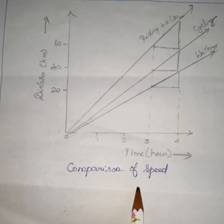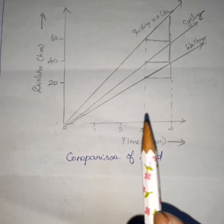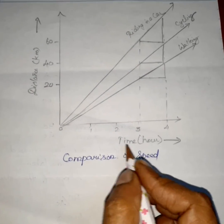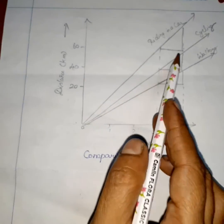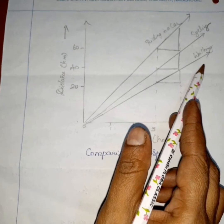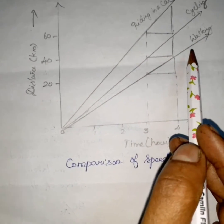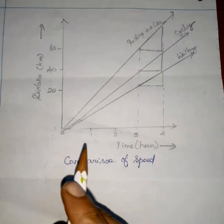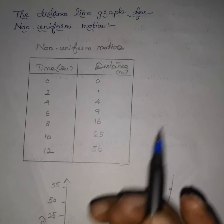Next, comparison of speed. We consider three different people — riding in a car, cycling, and walking — with distance along the y-axis and time along the x-axis. Cycling is faster than walking, and riding in a car is faster than cycling. The speed is constant — it is unaccelerated motion.